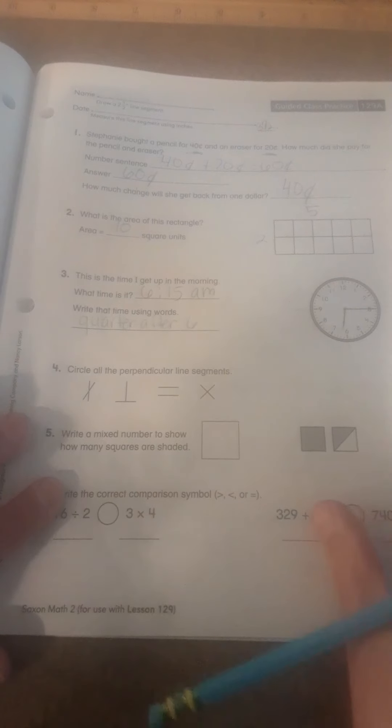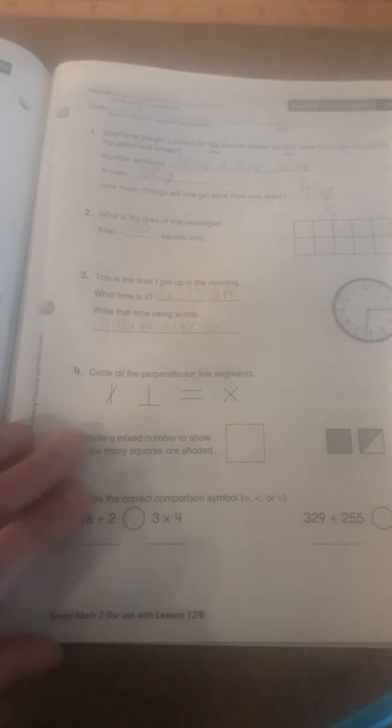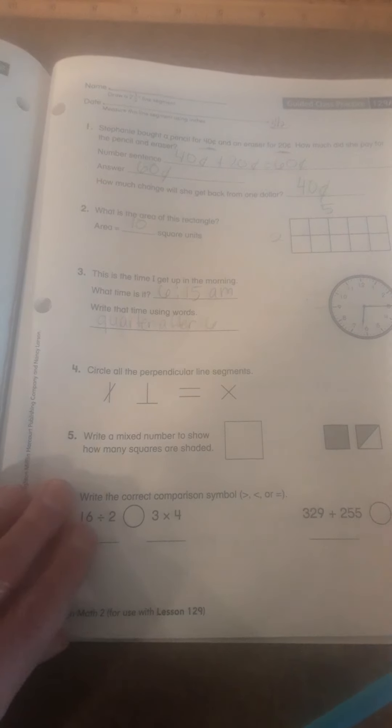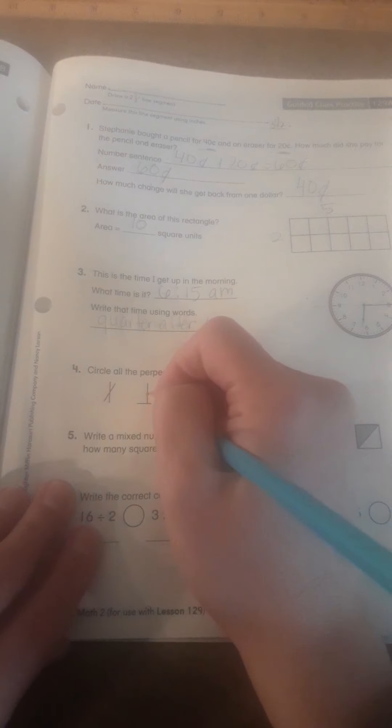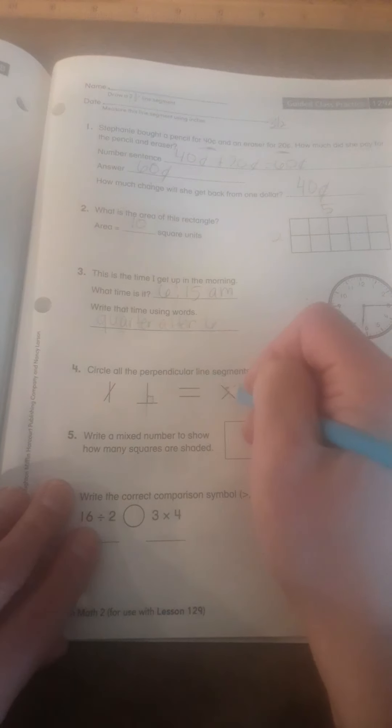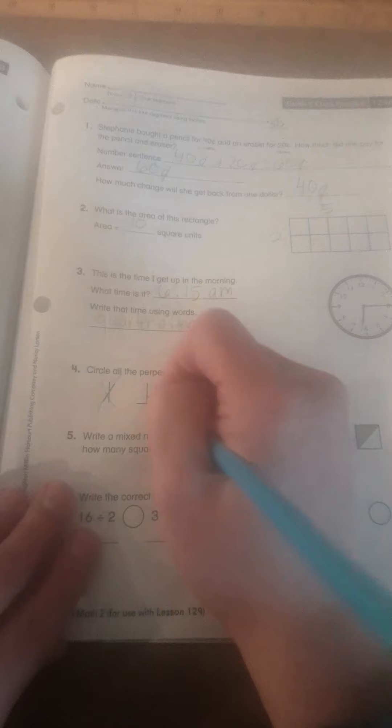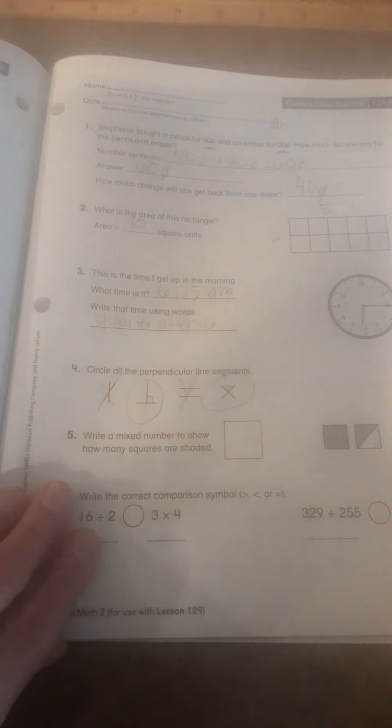It says circle all the perpendicular line segments. Alright, perpendicular means they will intersect, but there is also a right angle. These two, this is, that's parallel. So it would be that one and that one.